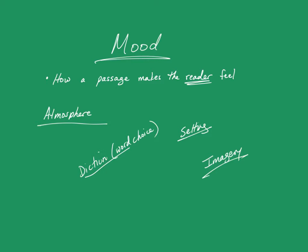Another way an author communicates mood is through character reactions. If the characters are fearful, amused, or content, those feelings will transfer to the reader. That doesn't always work, because sometimes an author will use a character who is ignorant of the situation, and you can't really follow their emotions or reactions. But if there's a character in a scene who is particularly aware of what's happening, then their emotions can be transferred to the reader.